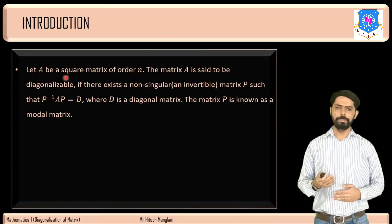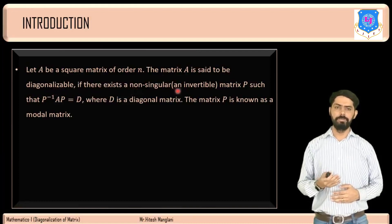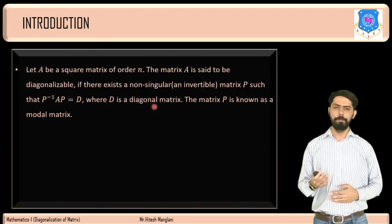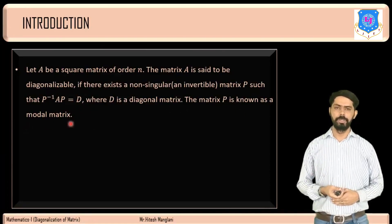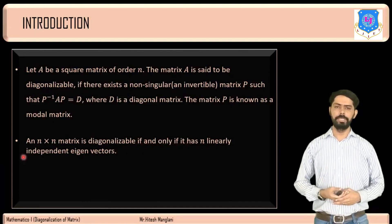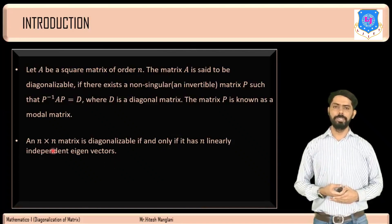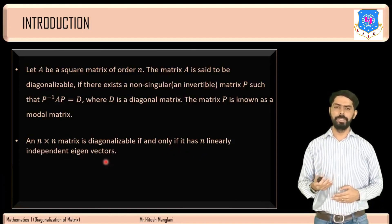Let A be a square matrix of order N. Matrix A is said to be diagonalizable if there exists a non-singular, i.e. invertible, matrix P such that P inverse AP equals D, where D is a diagonal matrix and P is known as the modal matrix. An N×N matrix is diagonalizable if and only if it has N linearly independent eigenvectors. So if a matrix is of order 3×3, there should be 3 linearly independent eigenvectors for it to be diagonalizable.